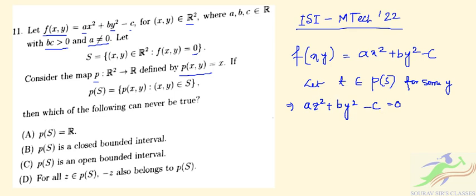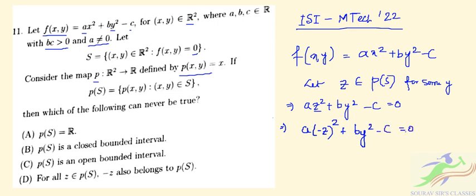We need to check symmetry. Since a·z² + b·y² - c = 0, we can also write a·(-z)² + b·y² - c = 0. So (-z, y) also belongs to S, which means -z is also an element of p(S). Therefore, if z belongs to p(S), then -z also belongs to p(S).